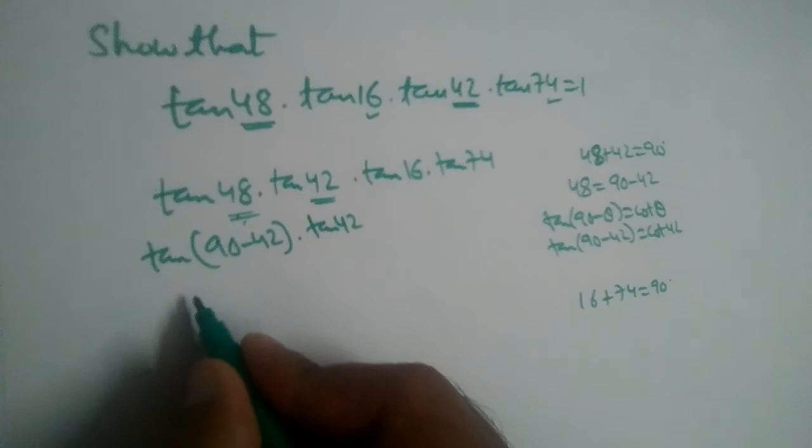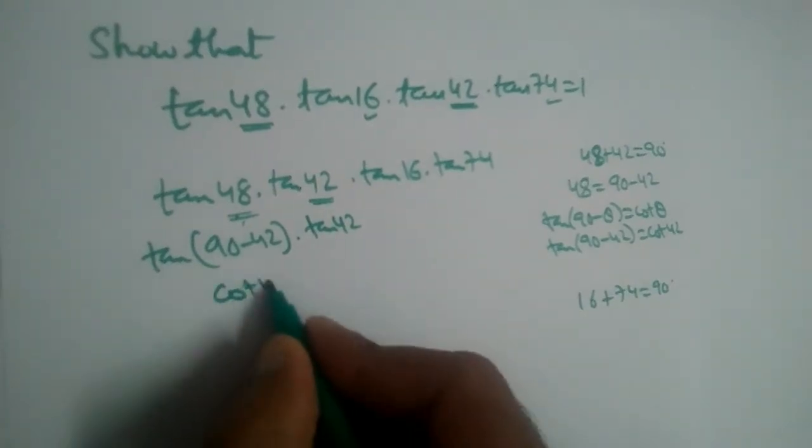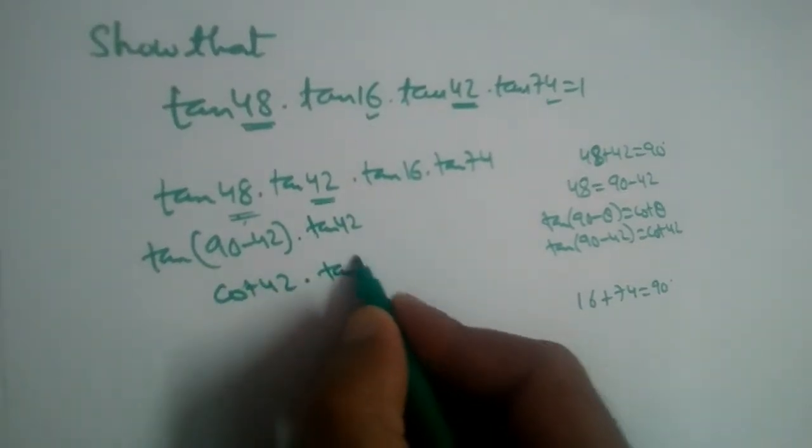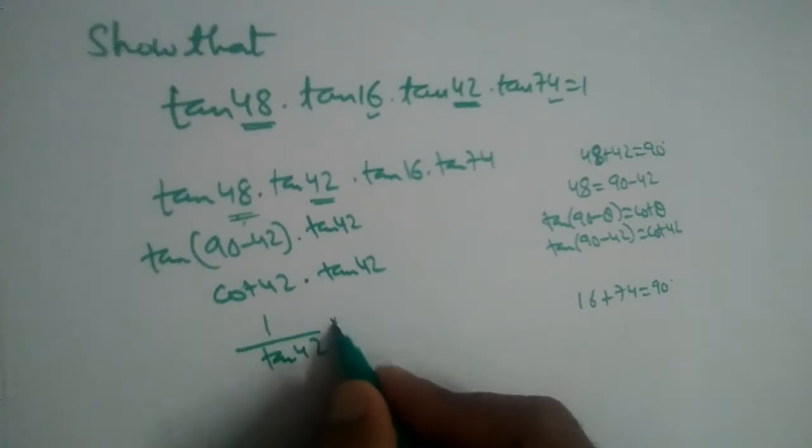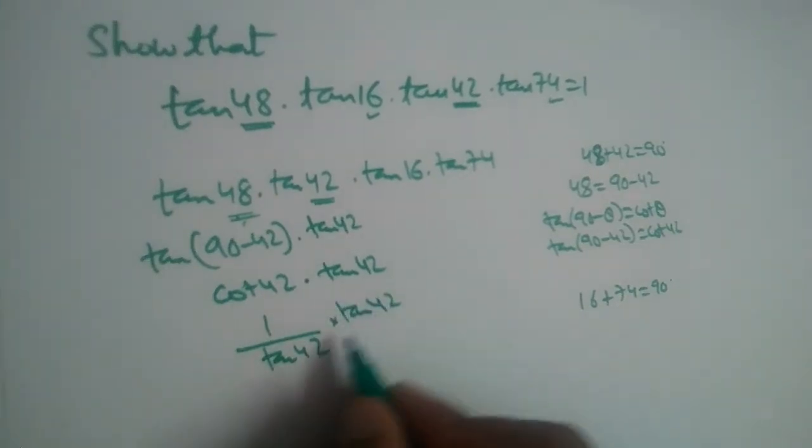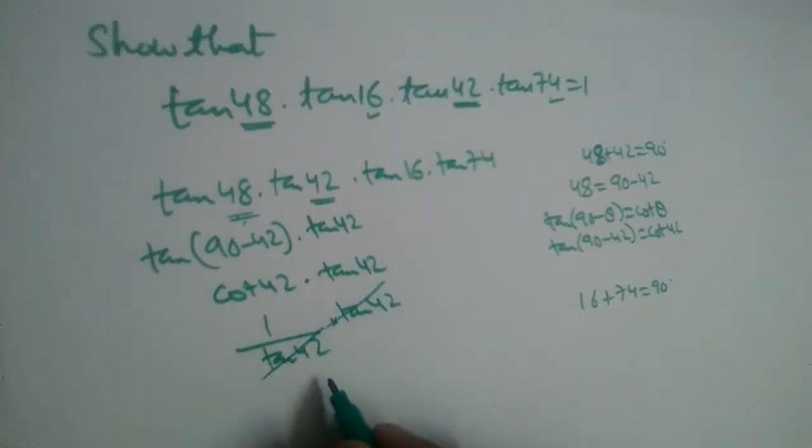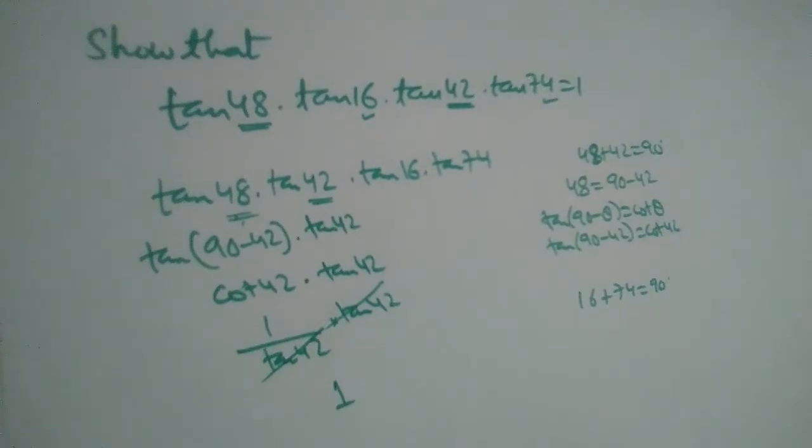tan(90° - 42°) equals cot 42° multiplied by tan 42°. Now these two are reciprocal functions, so in place of cot we can write 1 by tan. So it is 1 over tan 42° multiplied by tan 42°. Both are same values, it will be equal to 1.